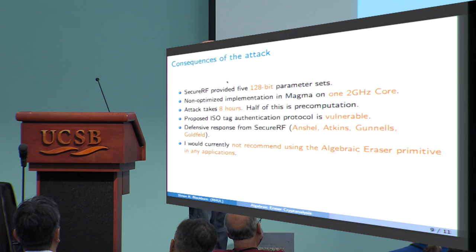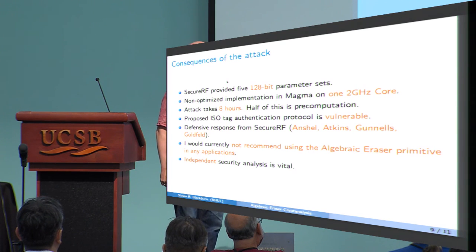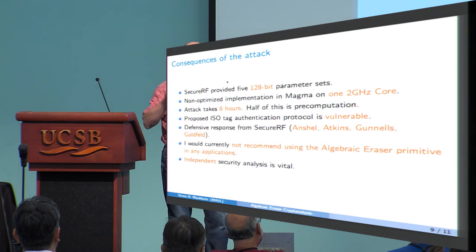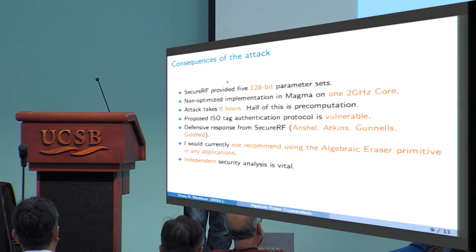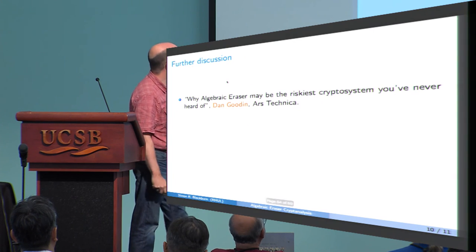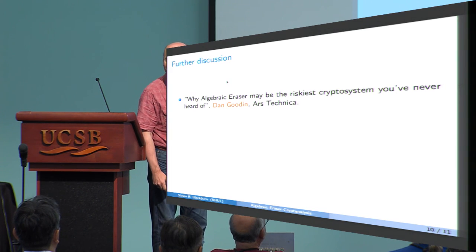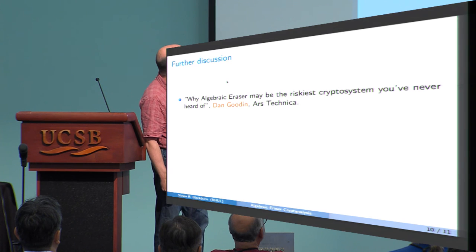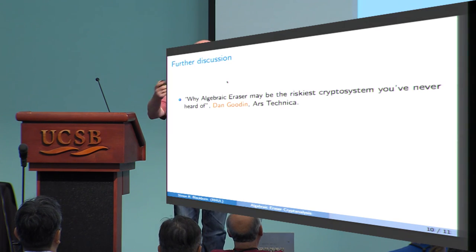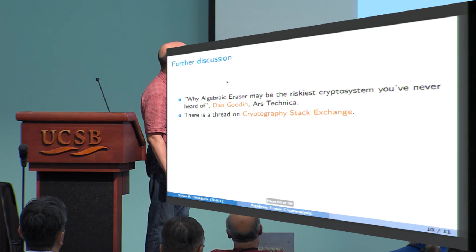So certainly I currently not recommend using the algebraic eraser primitive in any applications. Clearly. Also, I'd say independent security analysis is vital. In this case, there's a company that's generating parameters, not saying how these parameters are generated. And it comes with these kind of responses. That certainly knocks my confidence in what they're saying technically, whether it's going to be true or not. It needs to be verified independently. So independent security analysis is absolutely vital. There's some further discussion on this. A great title, Why algebraic eraser may be the riskiest cryptosystem you've never heard of, by Dan Goodin in Ars Technica. It's a lovely article, actually. Dan Goodin, I've got a very high respect. He was very careful to get accurate quotes from all the parties involved. So he was very careful, technically. So I've got a lot of respect for the way he wrote that article. So it's a good article.